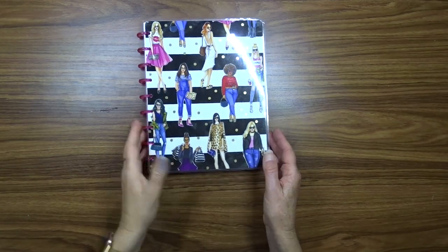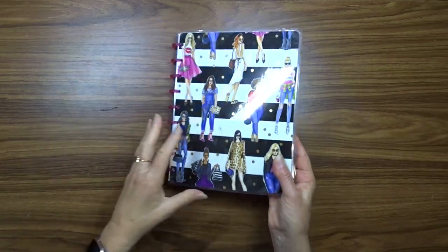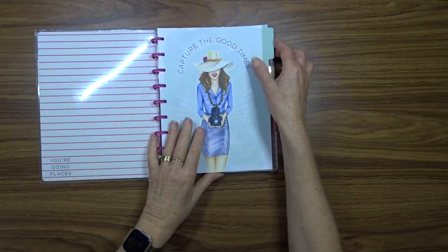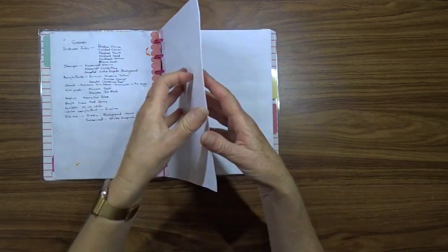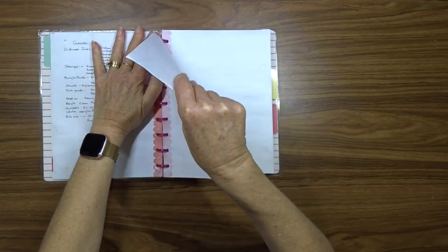I'm going to use a page out of my Happy Planner notebook. I have glued two pages together and given one side of the page a coat of gesso.